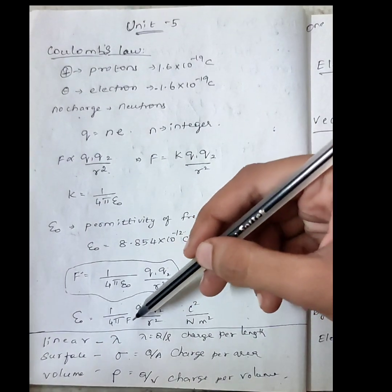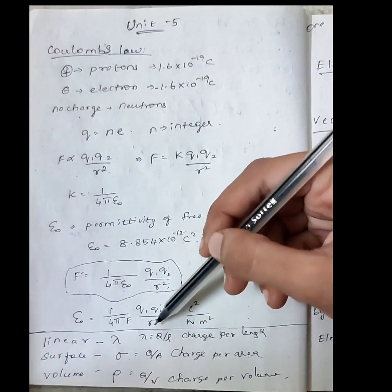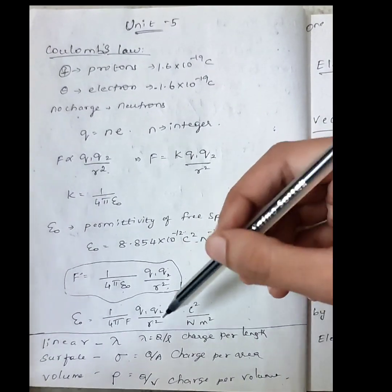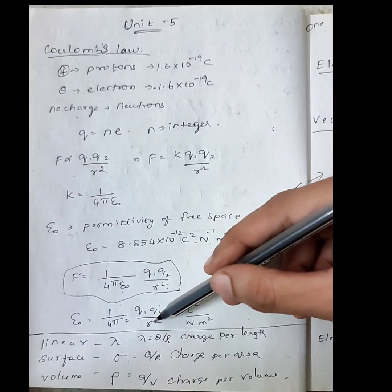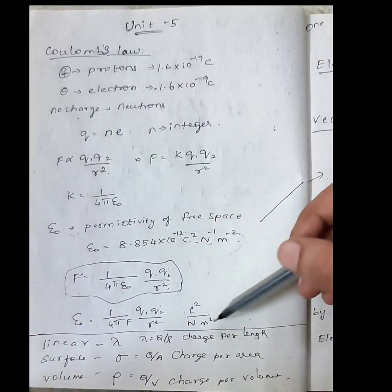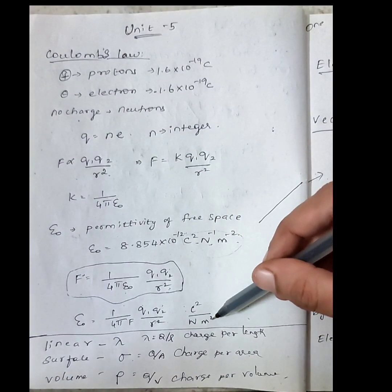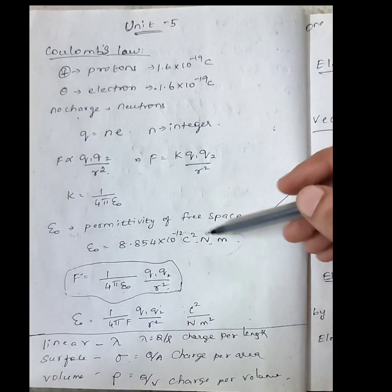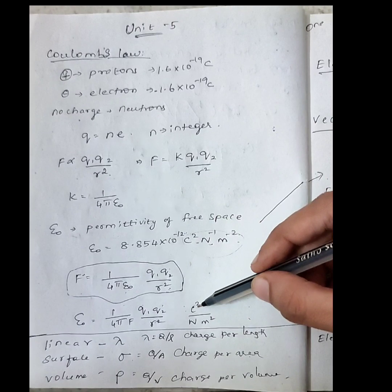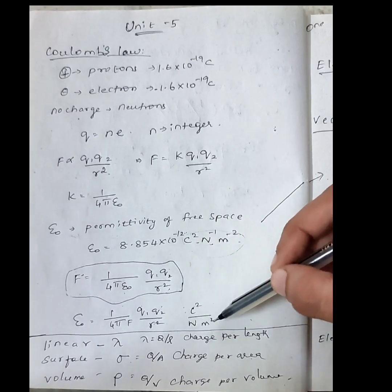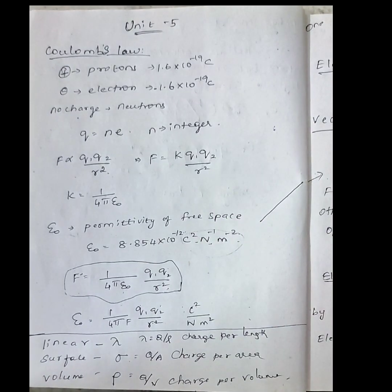The unit of charge is the coulomb. From the formula, one coulomb equals force times r squared divided by charge: C² = N·m². So the unit is coulomb squared per newton per meter squared, or C² N⁻¹ m⁻².